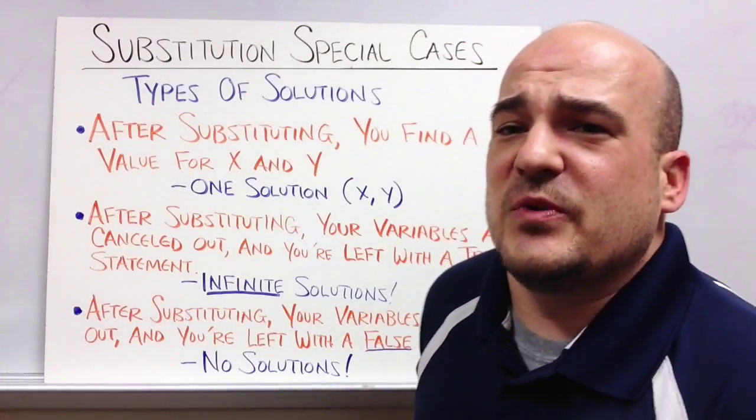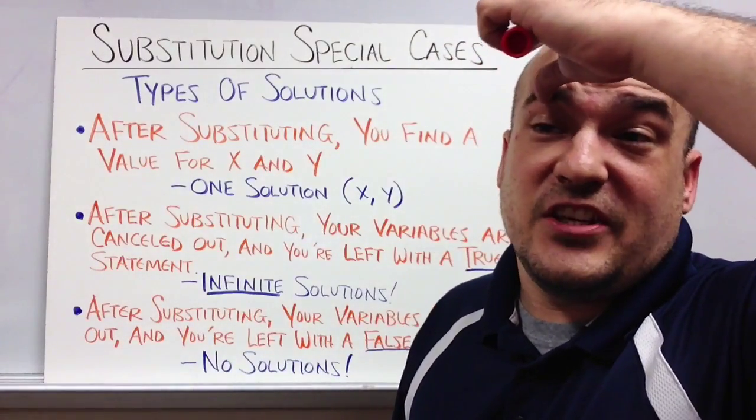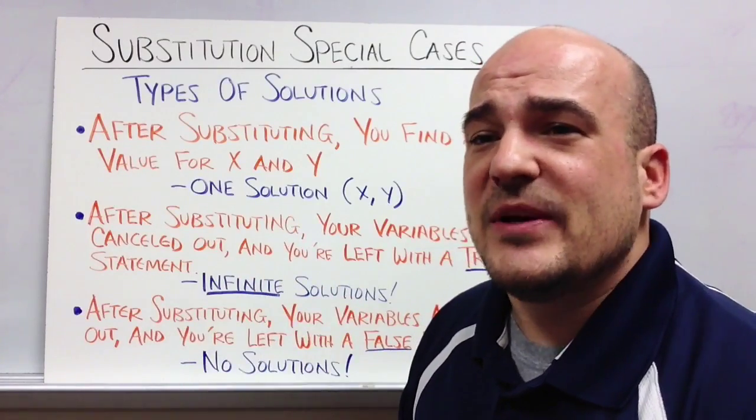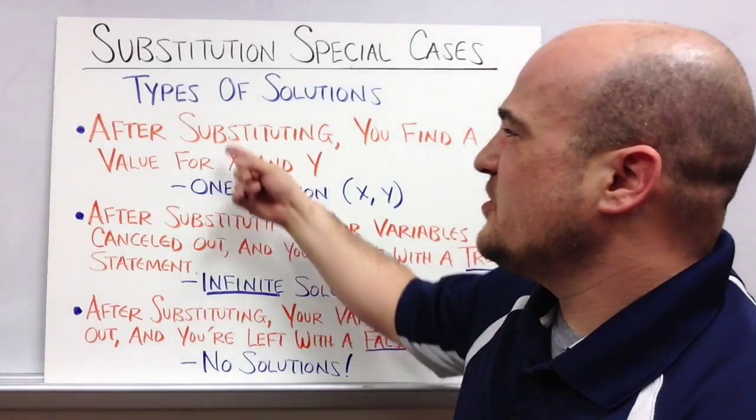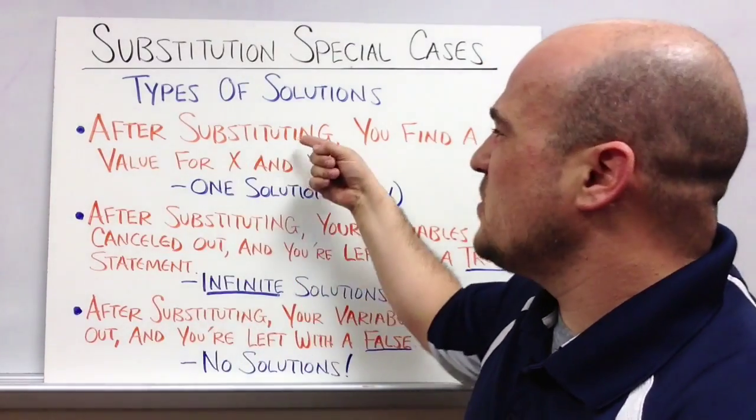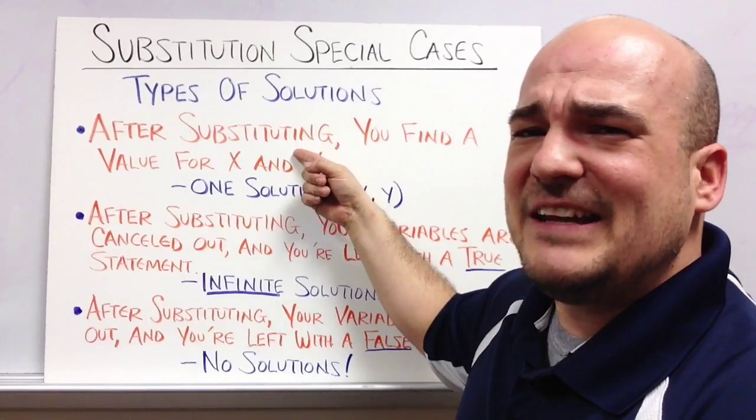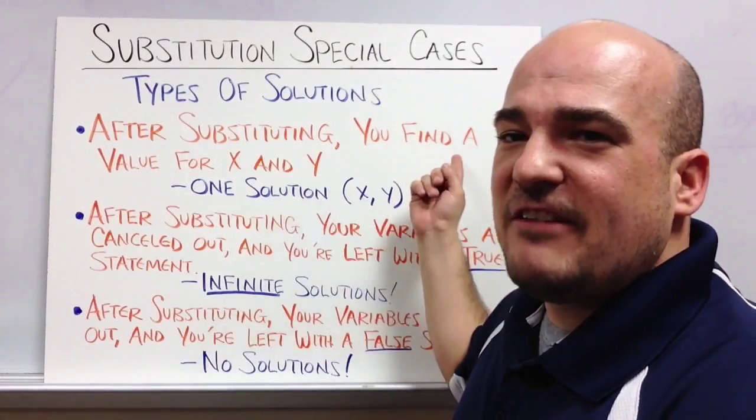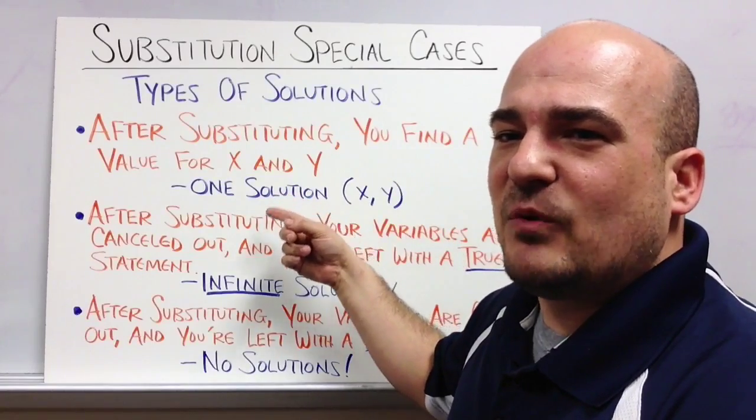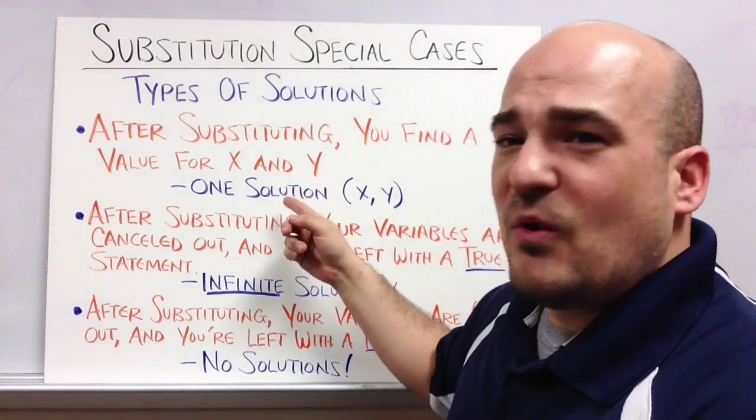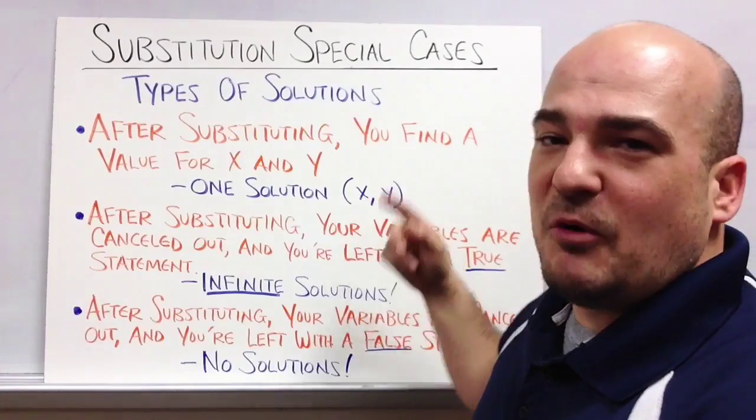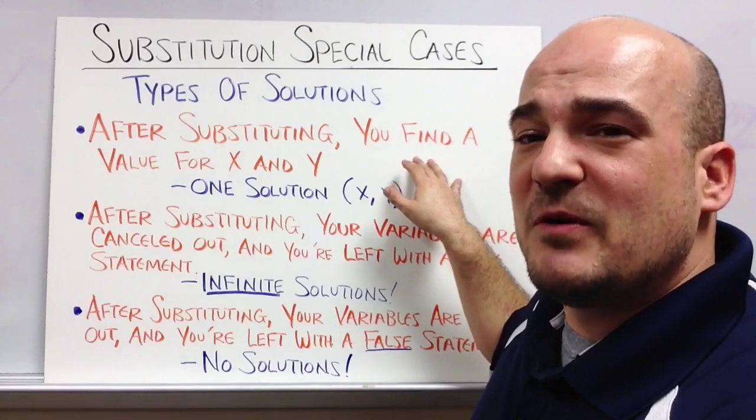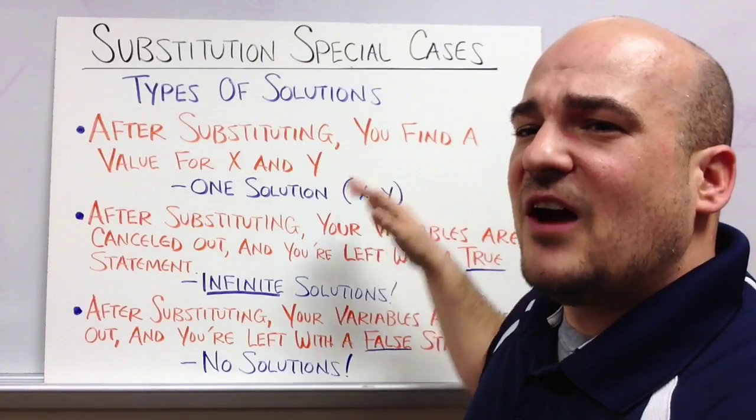Just to summarize real quick, any time that you solve with substitution, there's three things that could happen. Just like when we graphed, there's three things that could happen. In substitution, the first thing that could happen, and this is the most common thing, this is what happens in 95% of the problems, after you substitute you find a value for x and you find a value for y, and that's your solution. You have one solution, and the answer is x comma y. That's what happens most of the time. If you can solve problems like that, then you're in good shape. You're going to get most of the problems right.